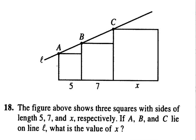The figure above shows three squares. That's important that these are squares, so we know these are 5 and 5 and 5, and 7 and 7 and 7, and x and x and x. We know those things.